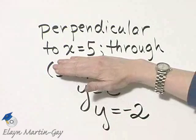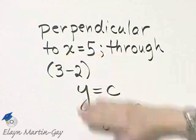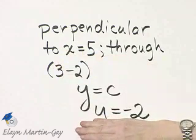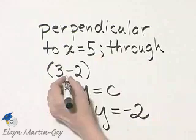Once again, this is a vertical line, this is a horizontal line, so these two lines will be perpendicular, and this horizontal line will go through this ordered pair.